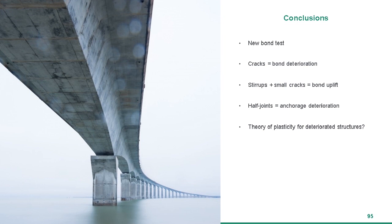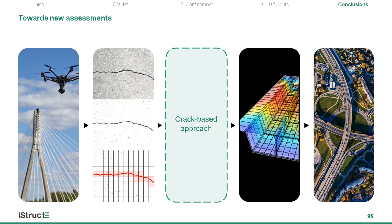To conclude: in this project we developed a new bond test; we showed that cracks, not corrosion itself, are responsible for bond degradation, but that in confined concrete, small cracks are in fact beneficial. We also showed that half joints are vulnerable to a type of anchorage deterioration that has been overlooked. The more general question was raised about the applicability of plasticity-based models to assess deteriorated structures. All this takes us one step closer to a crack-based theory of deteriorated structures — the keystone for a new assessment approach. Drones and new technologies allow acquisition of accurate data on bridge condition, but without a structural theory, an image of a crack is still just an image. We need to move from correlation to causality — a theory that translates crack information into parameters usable as inputs for our sophisticated models.